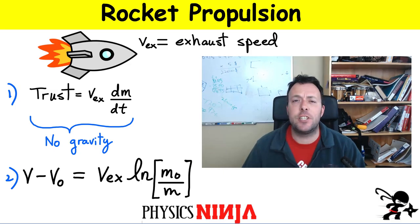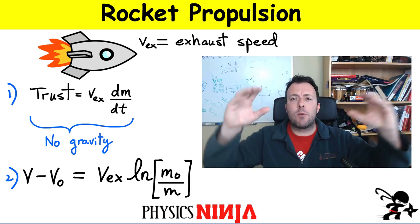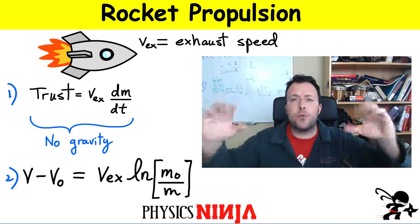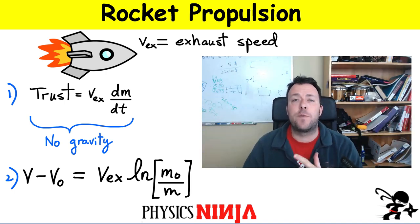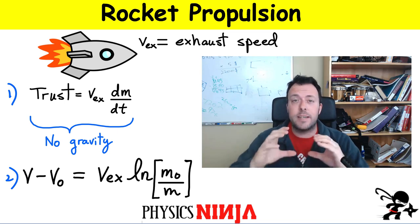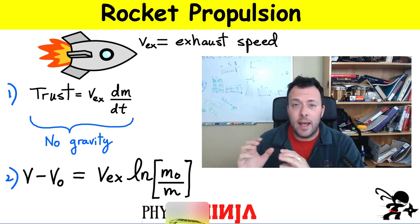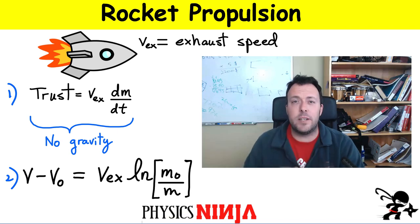Hi everybody, Physics Ninja. Today we're going to look at rocket propulsion. We've got a rocket traveling through space far away from any other mass, so there is no force of gravity acting on it. The only force that's going to make this rocket accelerate has to do with the combustion inside the rocket.